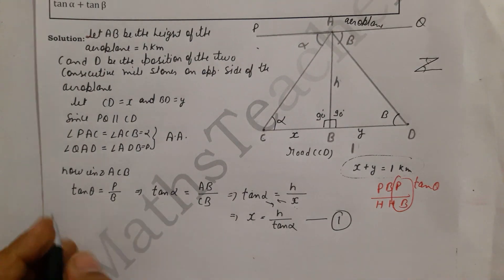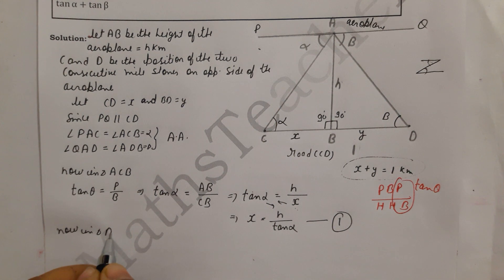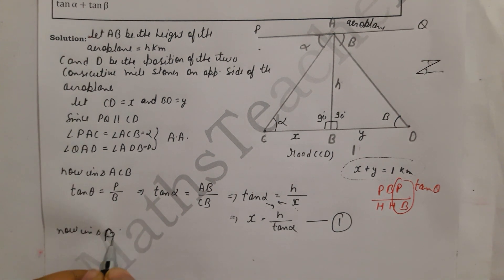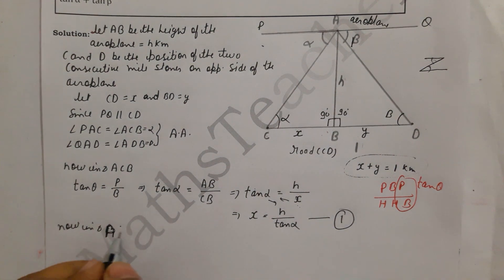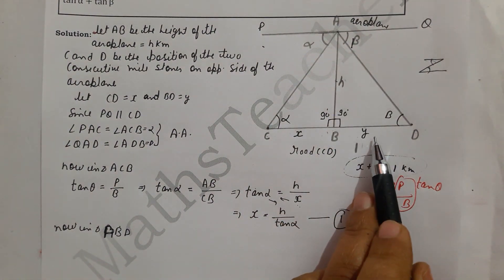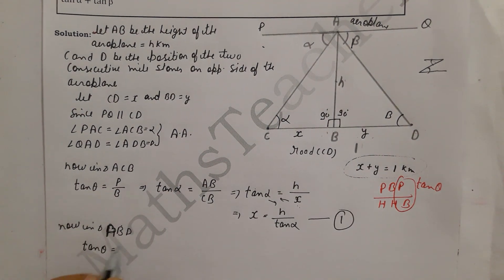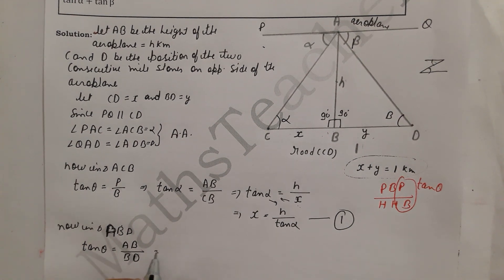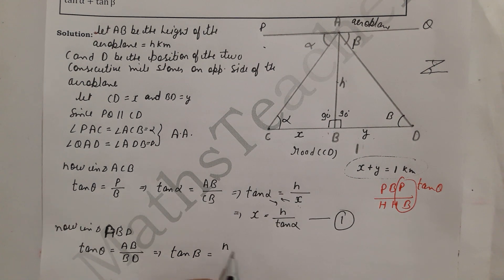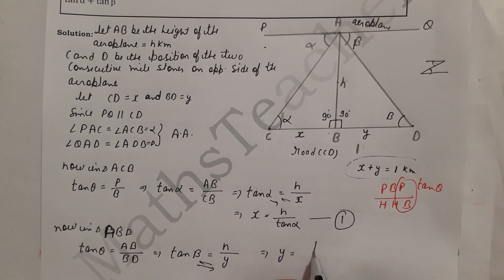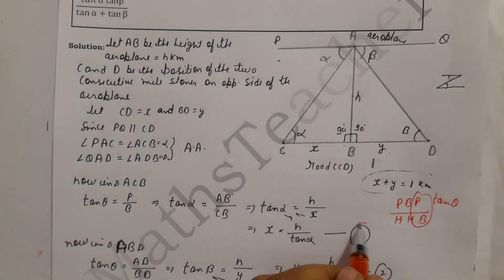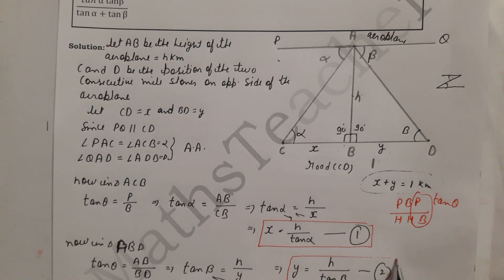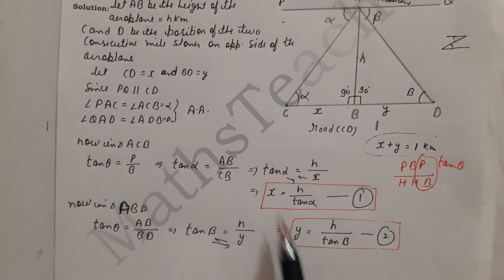Now in triangle ADB: height is AB (perpendicular H) and base is BD (which is y). So tan(beta) = H / y, which gives y = H / tan(beta). This is equation 2. Since x plus y equals 1, we now have the values of both x and y to substitute.